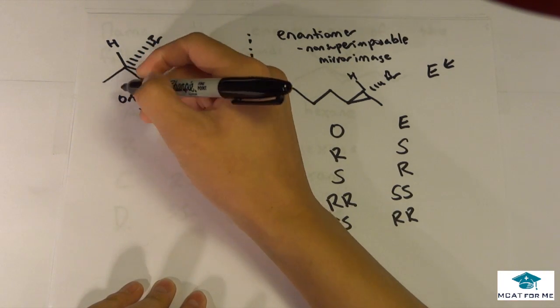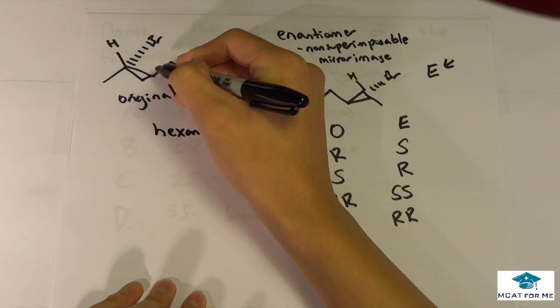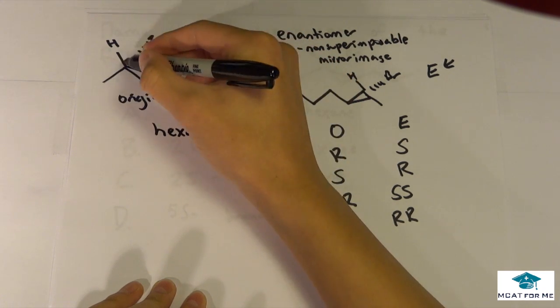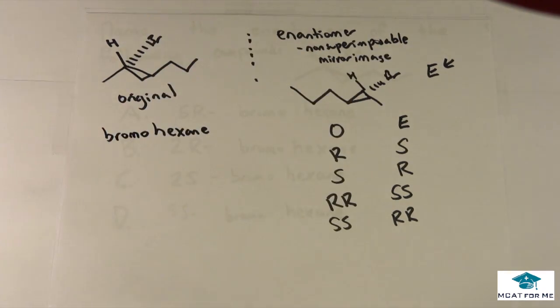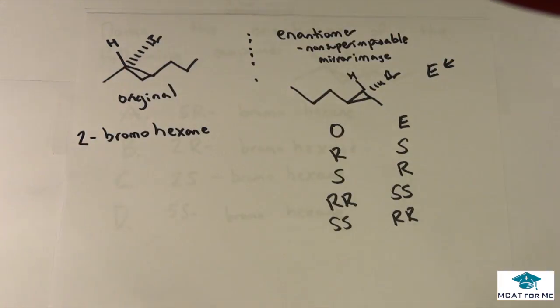Let's name this. We know this is a six carbon chain - one, two, three, four, five, six. And there's a bromo substituent. Is the bromo coming off the second carbon or the fifth carbon? We always want to label it the lowest number possible, so it's 2-bromohexane.